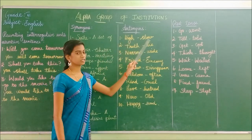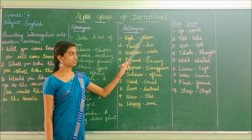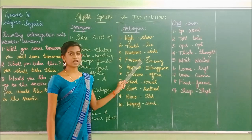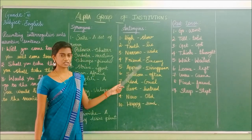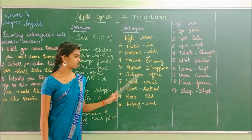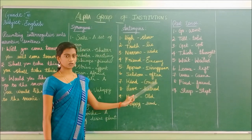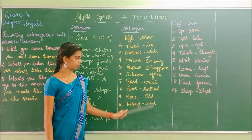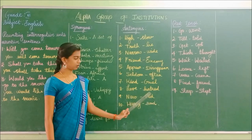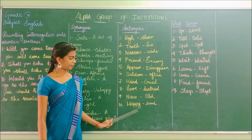Antonyms: High — slow. Truth — lie. Narrow — wide. Friend — enemy. Appear — disappear. Seldom — often. Kind — cruel. Love — hatred. New — old. Happy — sad.